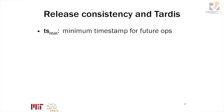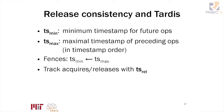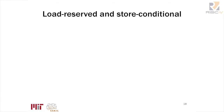For our release consistency implementation, instead of using pts we track three timestamps: ts_min, which bounds the timestamps of future operations; ts_max, which tracks the maximum timestamp of preceding operations; and ts_rel (timestamp release). With ts_min and ts_max we can implement fences by setting constraints on future operations, and we use ts_rel for acquire and release operations to implement release consistency on TARDIS.